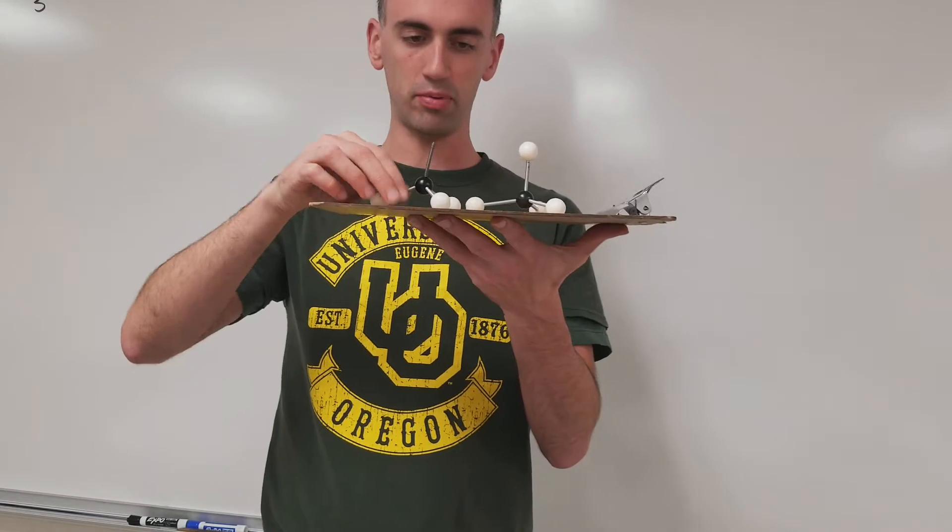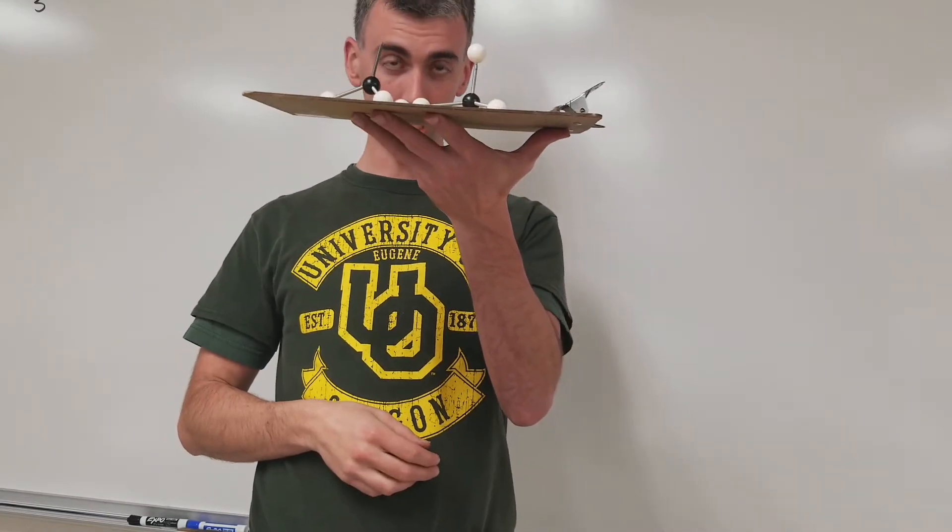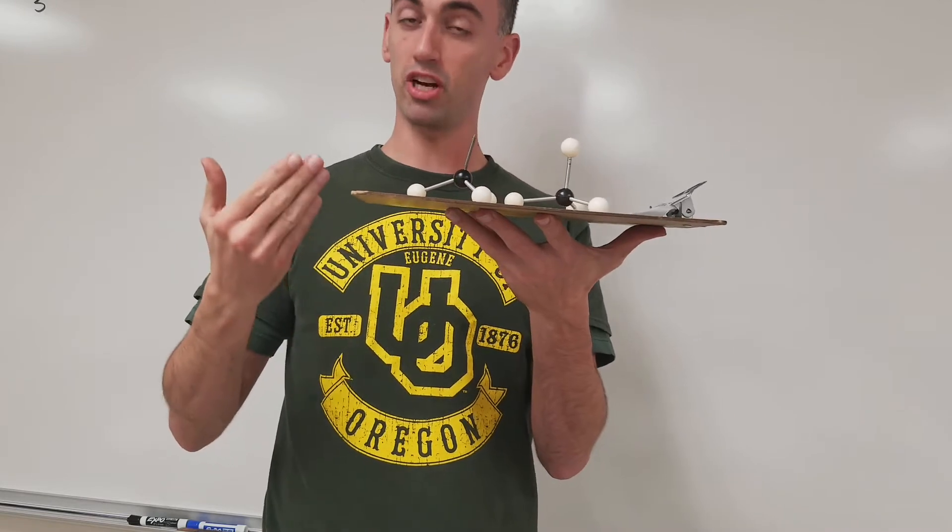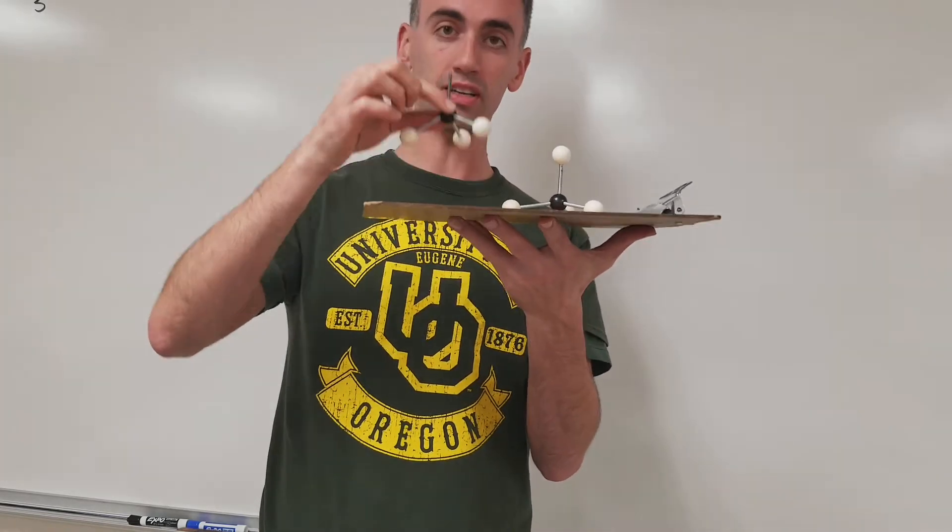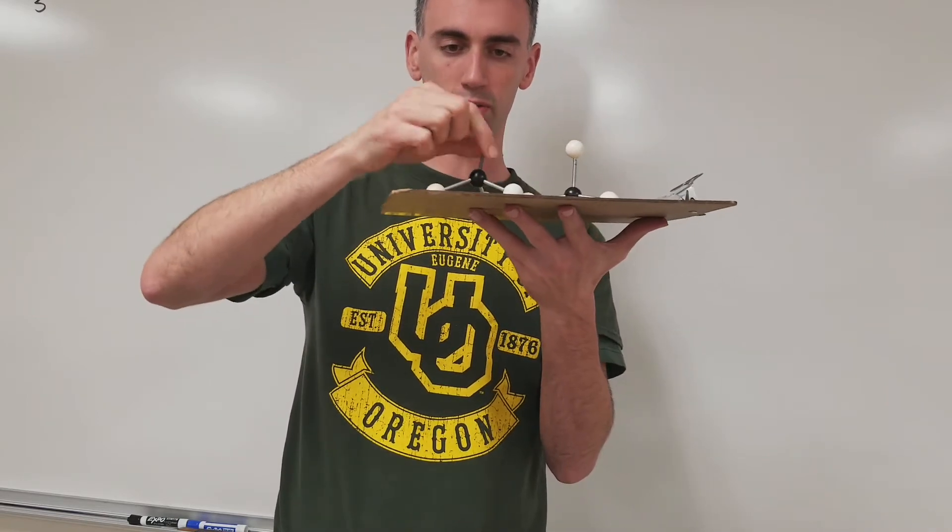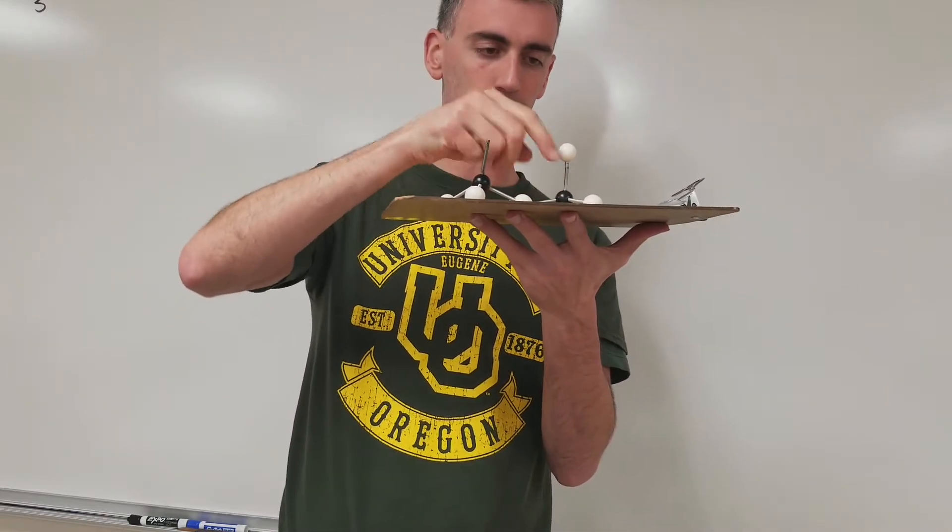So consider the example of these two. I might ask you, what is the shape? Let's look at the electron geometry, the geometry of just the electrons. If I look at the geometry of just the electrons, what I have here is one, two, three, four sets of electrons. One, two, three, four sets of electrons.